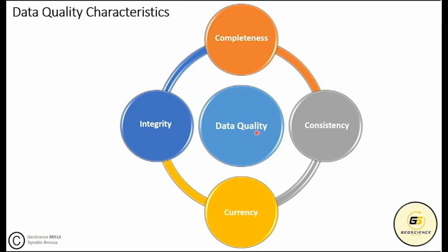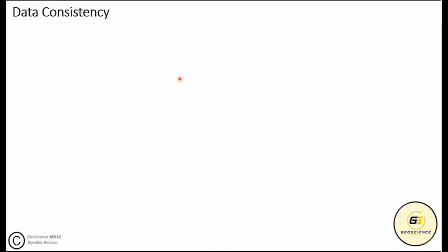Data completeness is the approach of confirming that certain attributes or variables always have assigned values in the dataset.